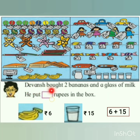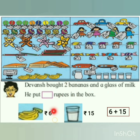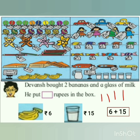Next is Devansh. Devansh bought 2 bananas and a glass of milk. One banana costs 3 rupees, so he bought 2 bananas — 2 into 3 is 6. And a glass of milk costs 15 rupees. Let's add by counting forward: making 6 sticks and counting each stick after 15 — 16, 17, 18, 19, 20, 21. He put 21 rupees in the box.